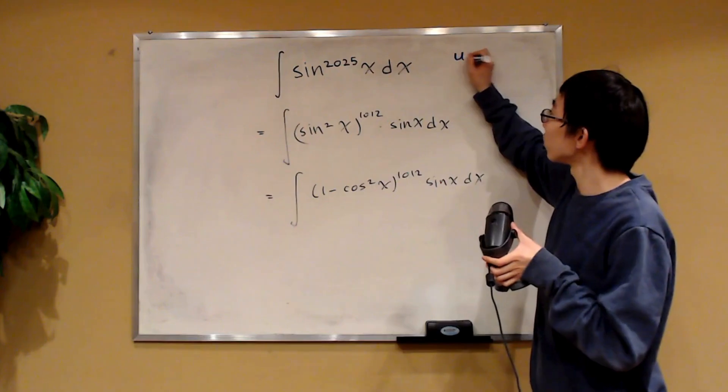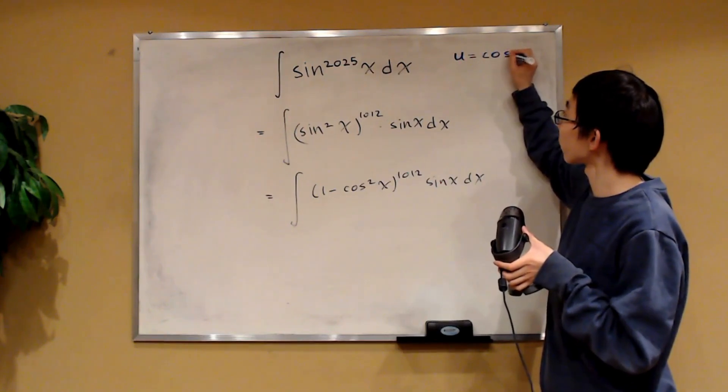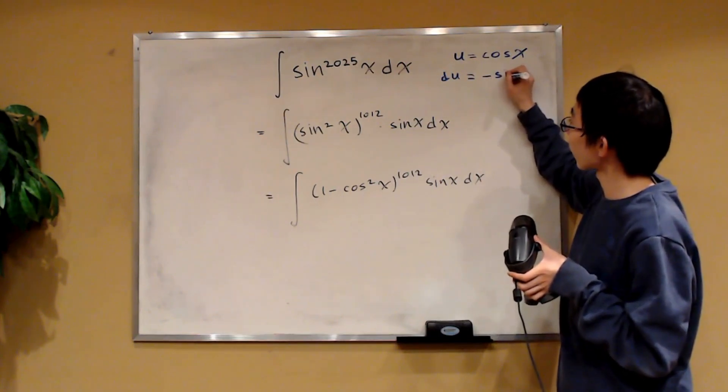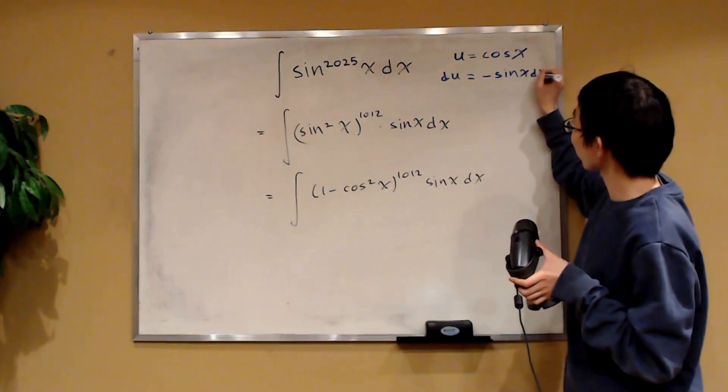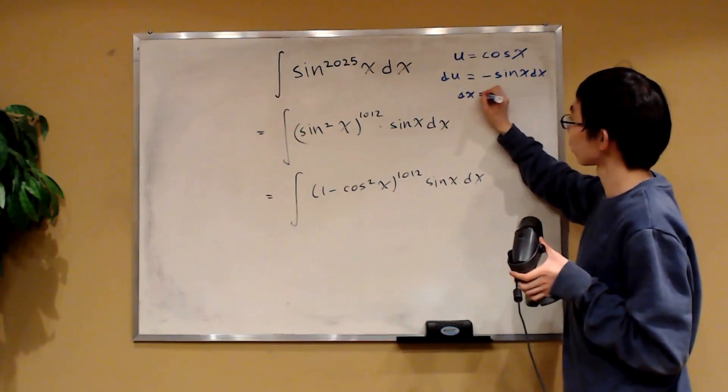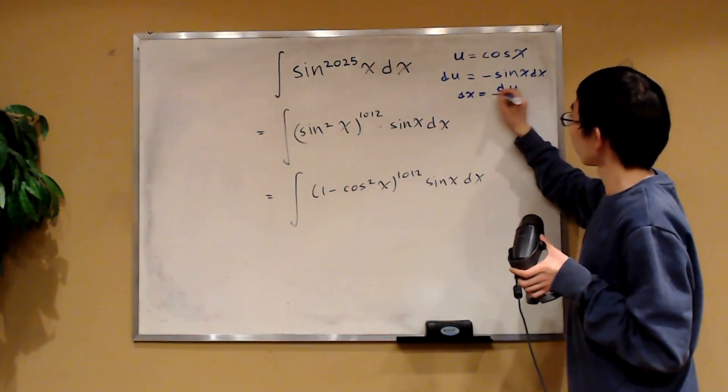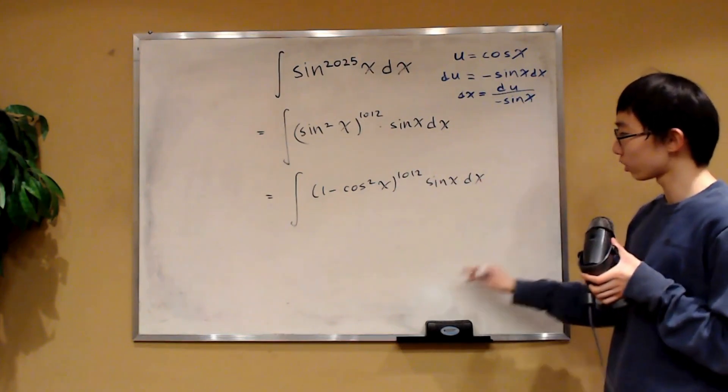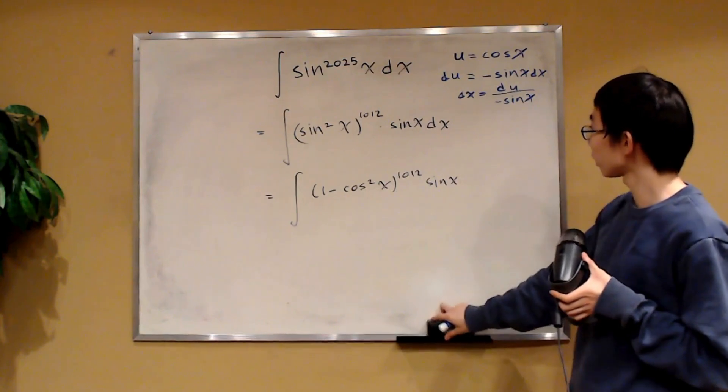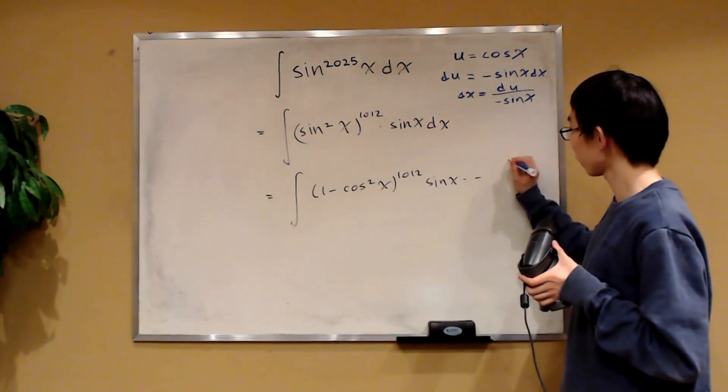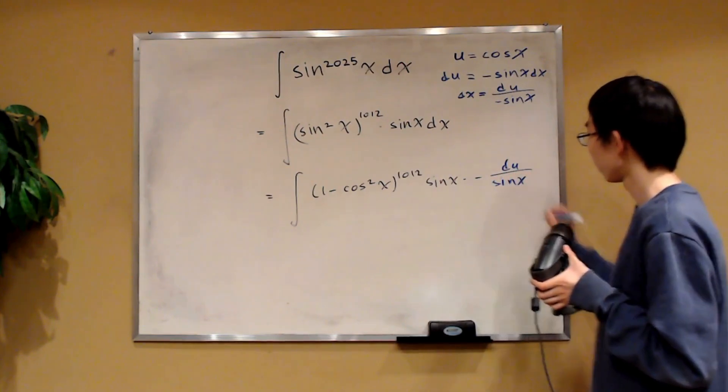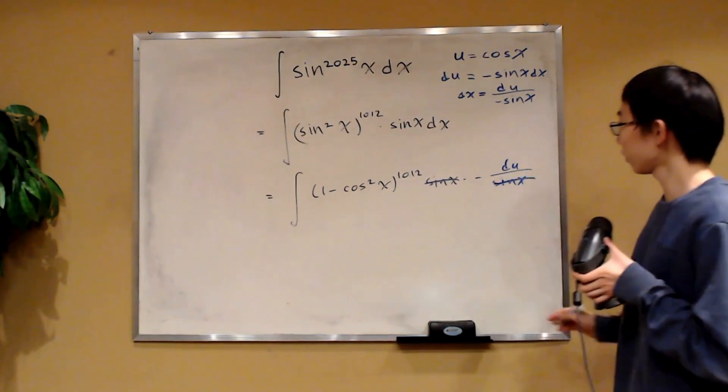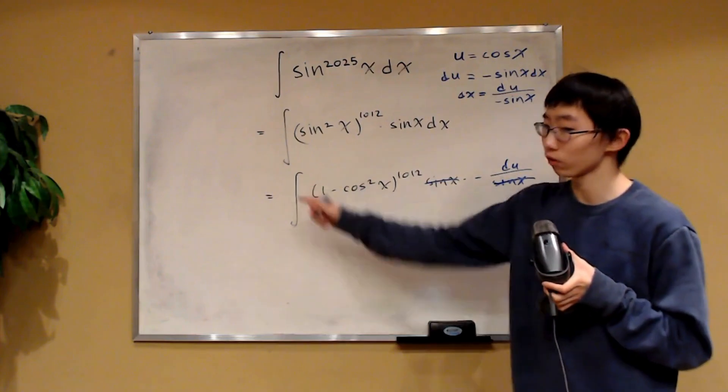Specifically, let u equals cosine of x, then du is equal to negative sine of x dx. And therefore, we have dx is equal to du over negative sine of x. So we can replace this dx over here. This is equal to times negative du over sine of x. And would you look at that? This sine x and sine x over here, they cancel away.